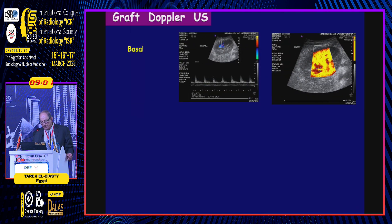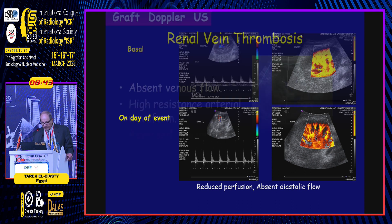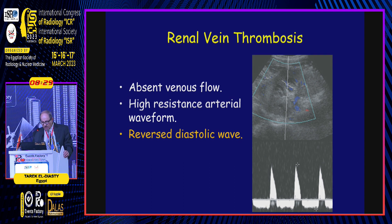In a case of a kidney transplant recipient, baseline power Doppler mode shows good perfusion. One day after the event, there is reduction of power flow. On follow-up, absent venous flow and high-resistive arterial waveform with reversed diastolic flow are observed. Reversed diastolic flow is highly suggestive of renal vein thrombosis.